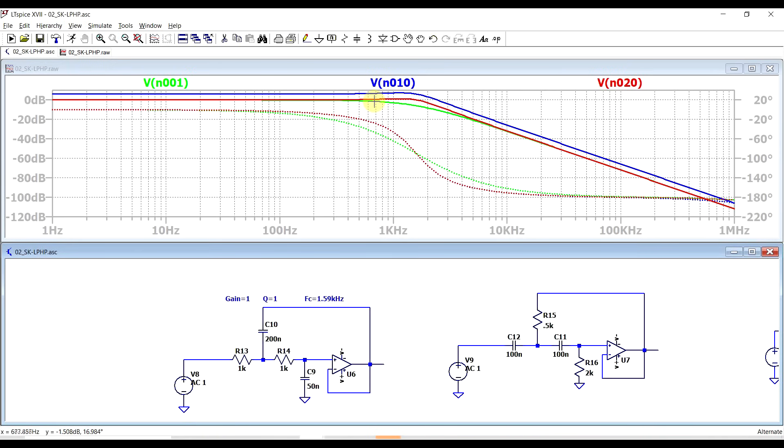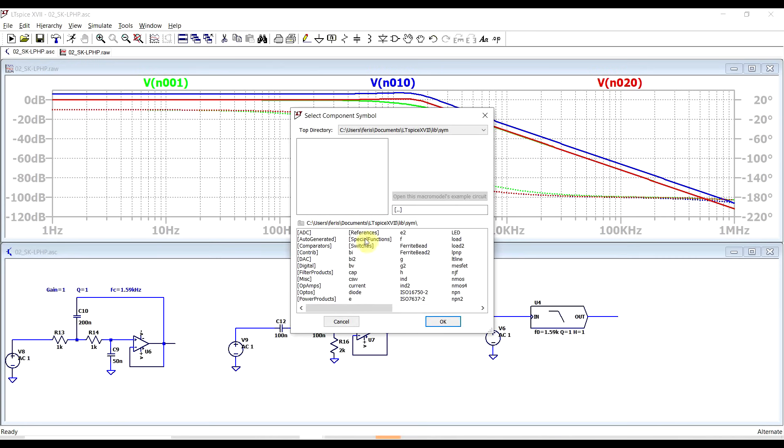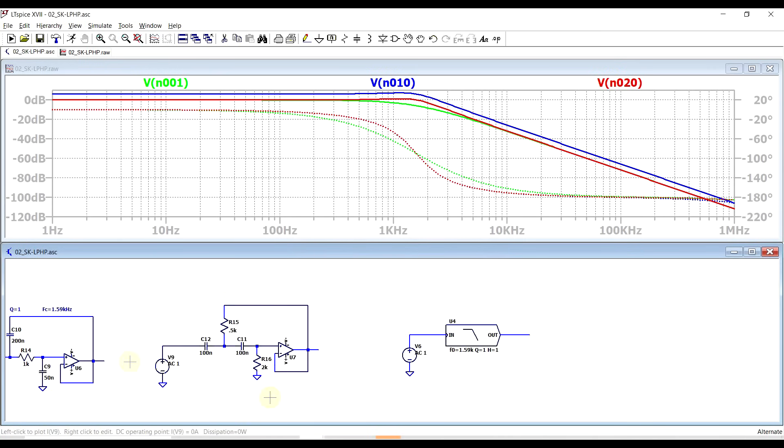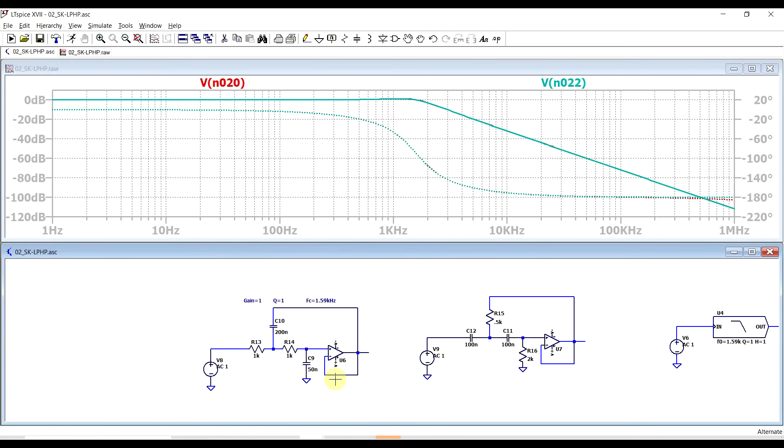Now, if you're unsure of what the response is supposed to look like for a second order filter, you can always use the generic filter blocks. So these are found under special functions, there's all sorts of these, and for this example, I set the corner frequency, Q factor and gain the same as for our last circuit. So if we plot out this response, we can see that it's exactly the same as the response coming from our discrete circuit. So if the two responses line up, you got the math right.